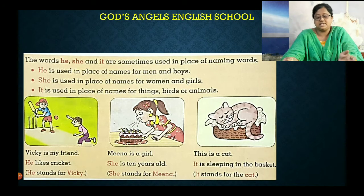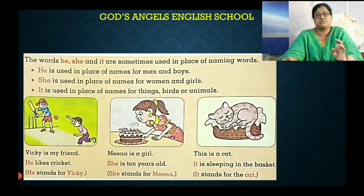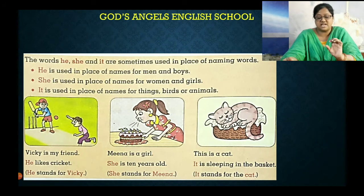ऐसे ही यहाँ पर — this is a cat. अब इसके लिए it कहाँ use कर सकते हैं? Animals में, birds में, और things में — इनके लिए हम it use करते हैं. It is sleeping in the basket. IT stands for cat.